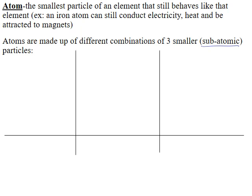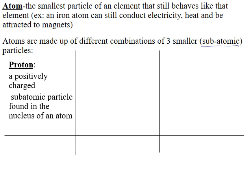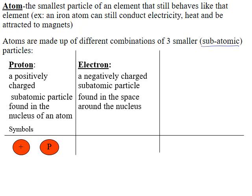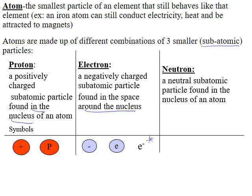The first subatomic particle is called a proton — that is a positively charged particle found in the nucleus of the atom, sometimes shown as a plus sign or a P. The opposite is called an electron: negatively charged subatomic particles found in the space around the nucleus. The symbol for electrons can be a negative sign in a circle, an E, or commonly E with a little minus. And lastly, we have neutrons — neutral subatomic particles with no charge, also found in the nucleus. The symbols can be a circle with N, equal signs, or left blank because there's no charge.